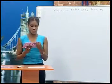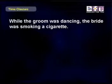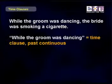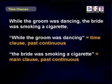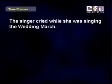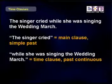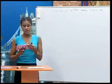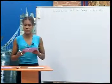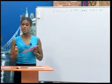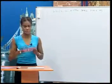Let's look again at those sentences. While the groom was dancing, the bride was smoking a cigarette. While the groom was dancing is a time clause in the past continuous. The bride was smoking a cigarette is the main clause in the past continuous. Next example: The singer cried while she was singing the wedding march. The singer cried — main clause in the simple past. While she was singing the wedding march — the time clause is in the past continuous. Usually, the past continuous is the continuing action, and the simple past is an action that happens in the middle of it — it interrupts it.